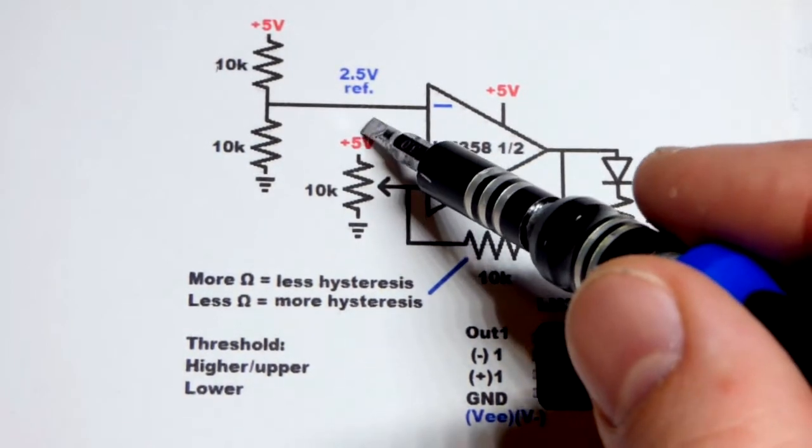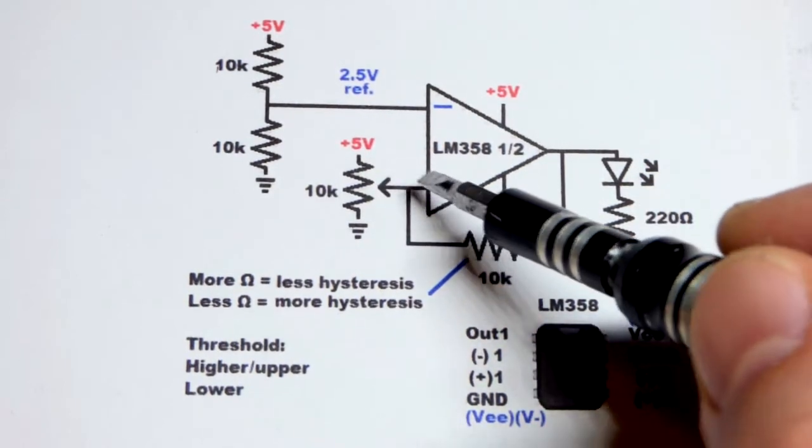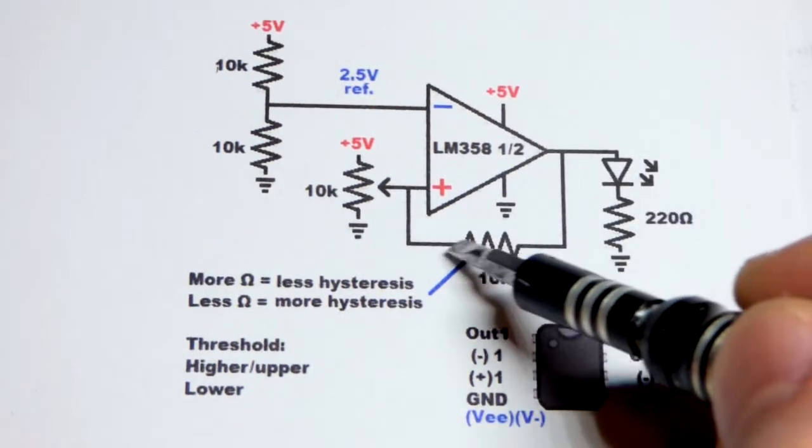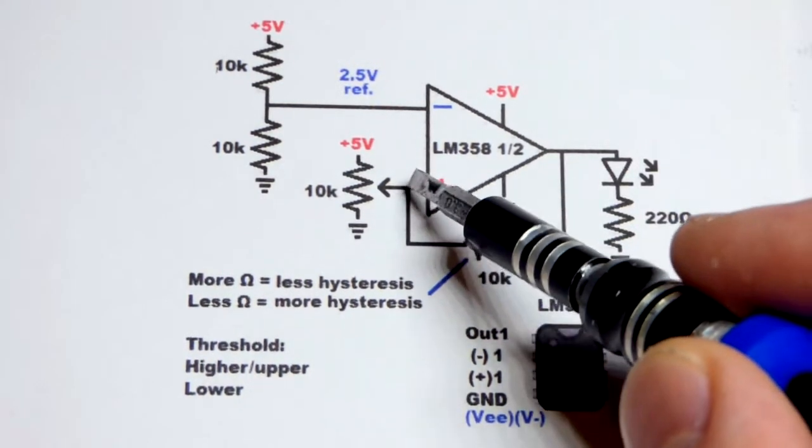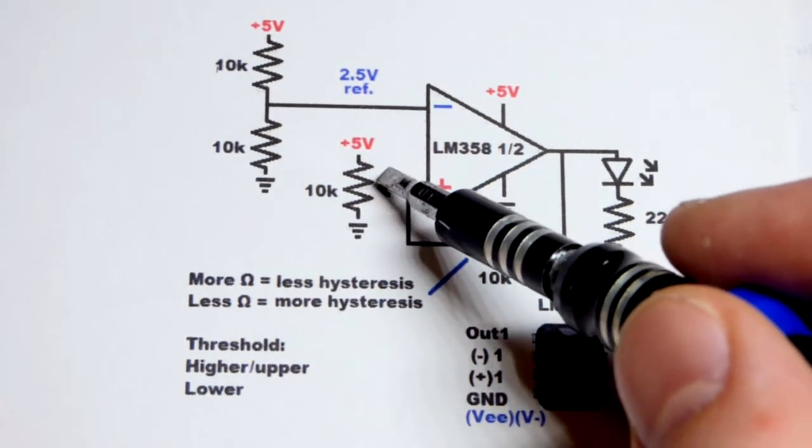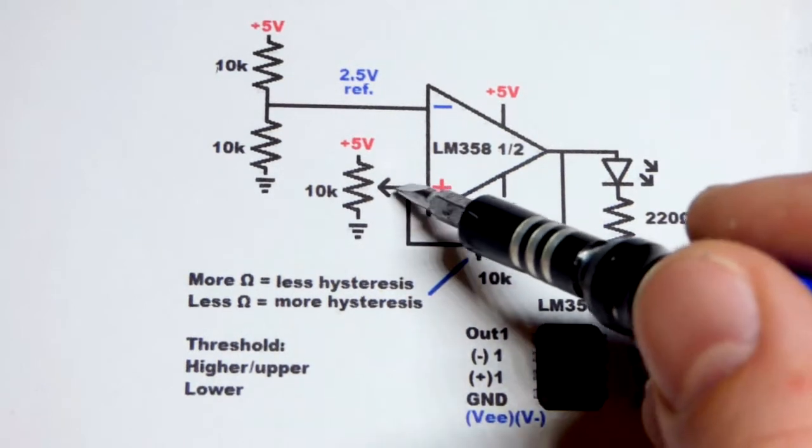So there's resistance from the positive supply coming that way. And then unless you put the trim pot all the way to the positive supply, as long as it's down at least a little bit, there's resistance from the positive supply that way. And so we got two paths from the positive supply. Even though it's going through resistance, that pulls the voltage up. It's like having less resistance. It's like having the trim pot even closer to five volts than it actually is.